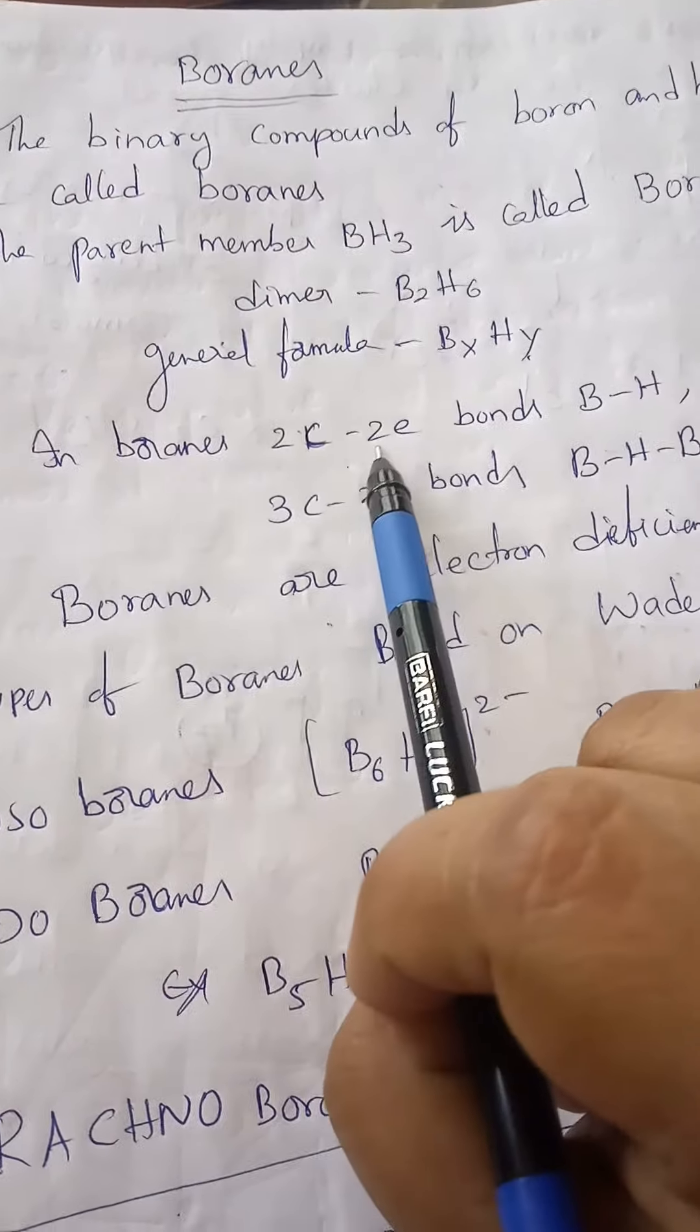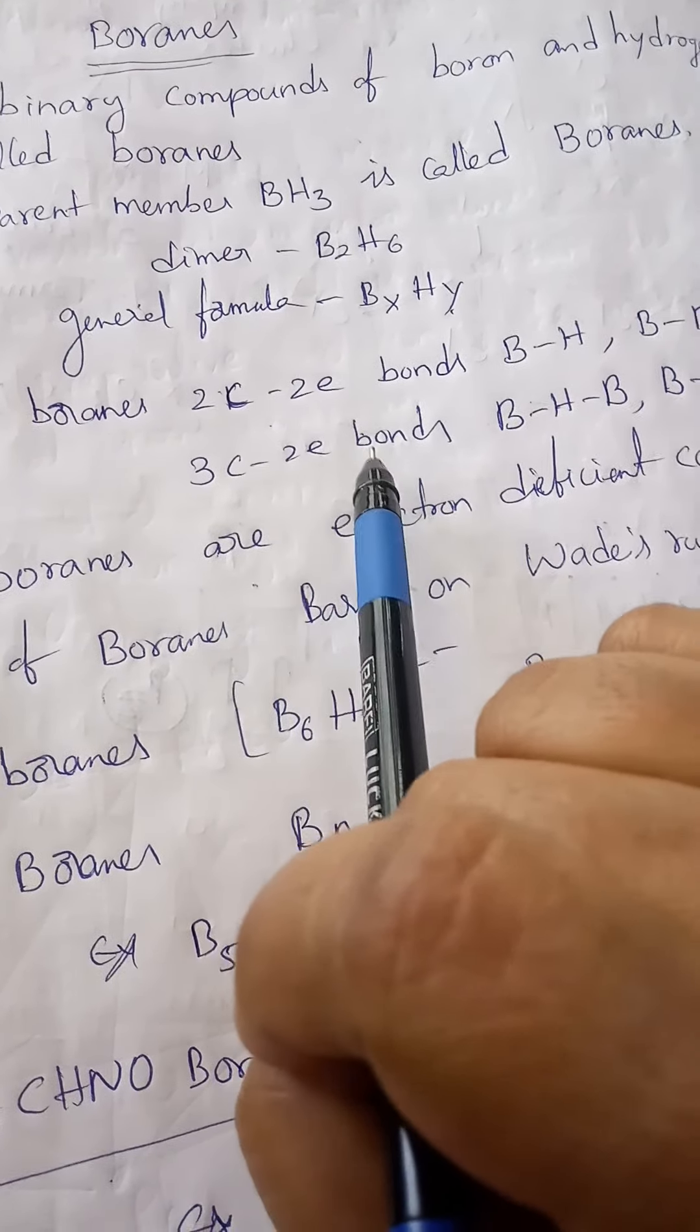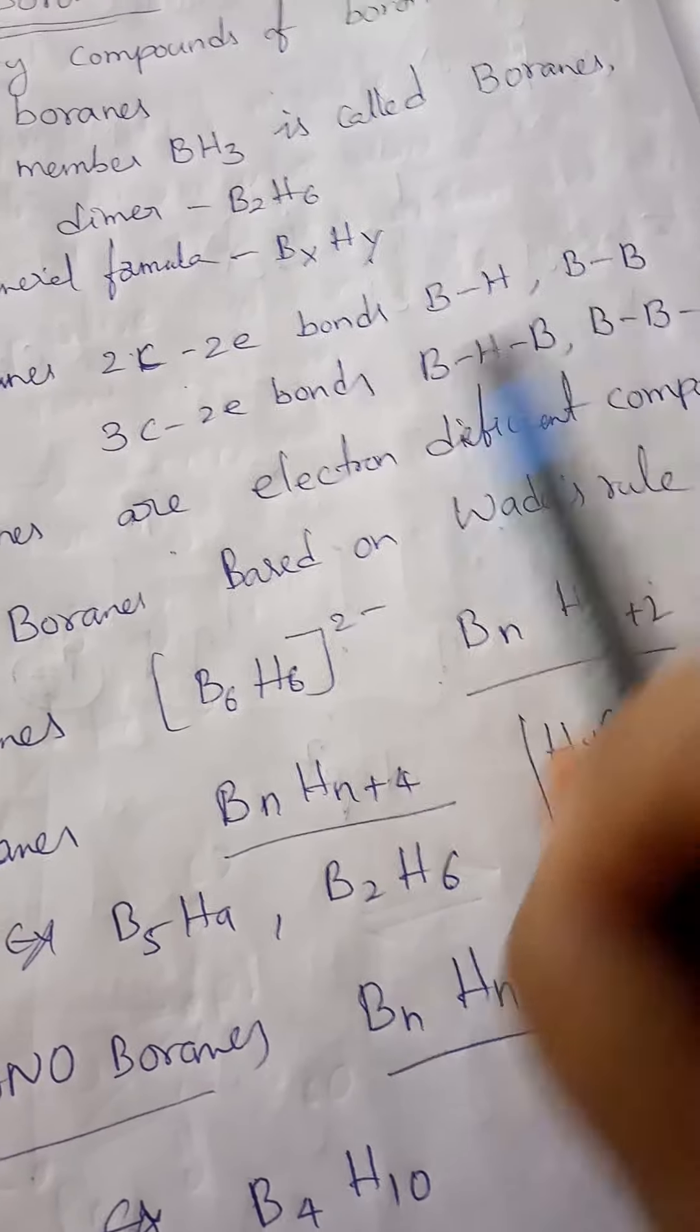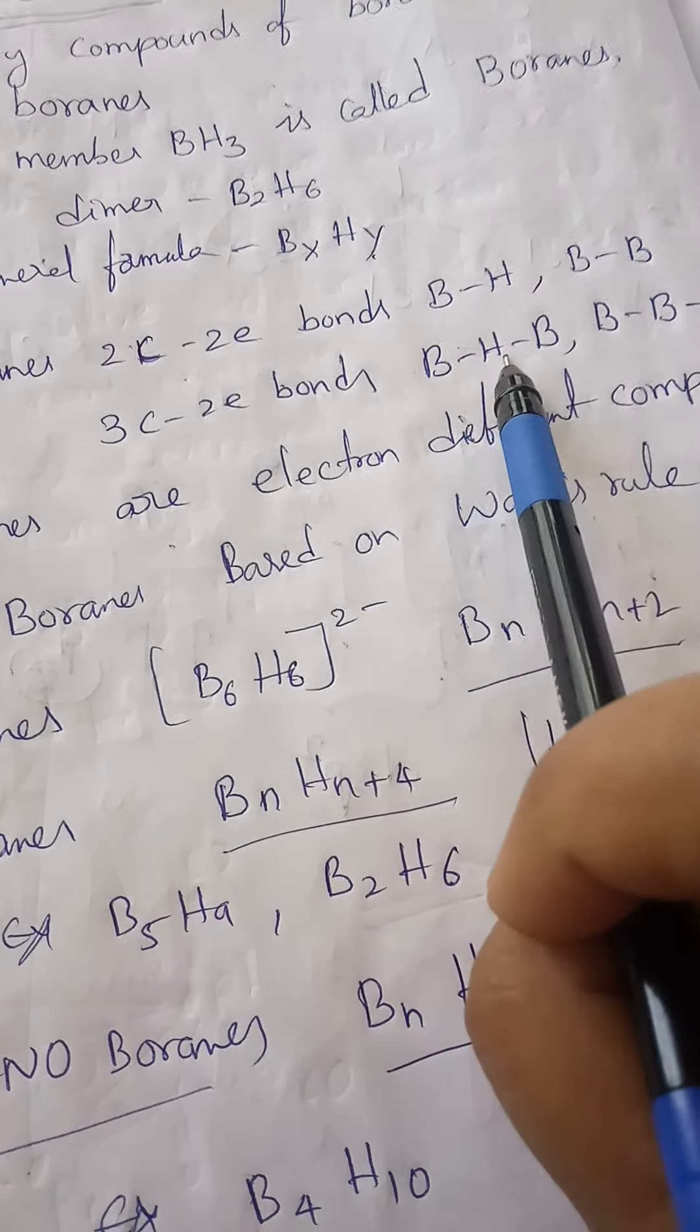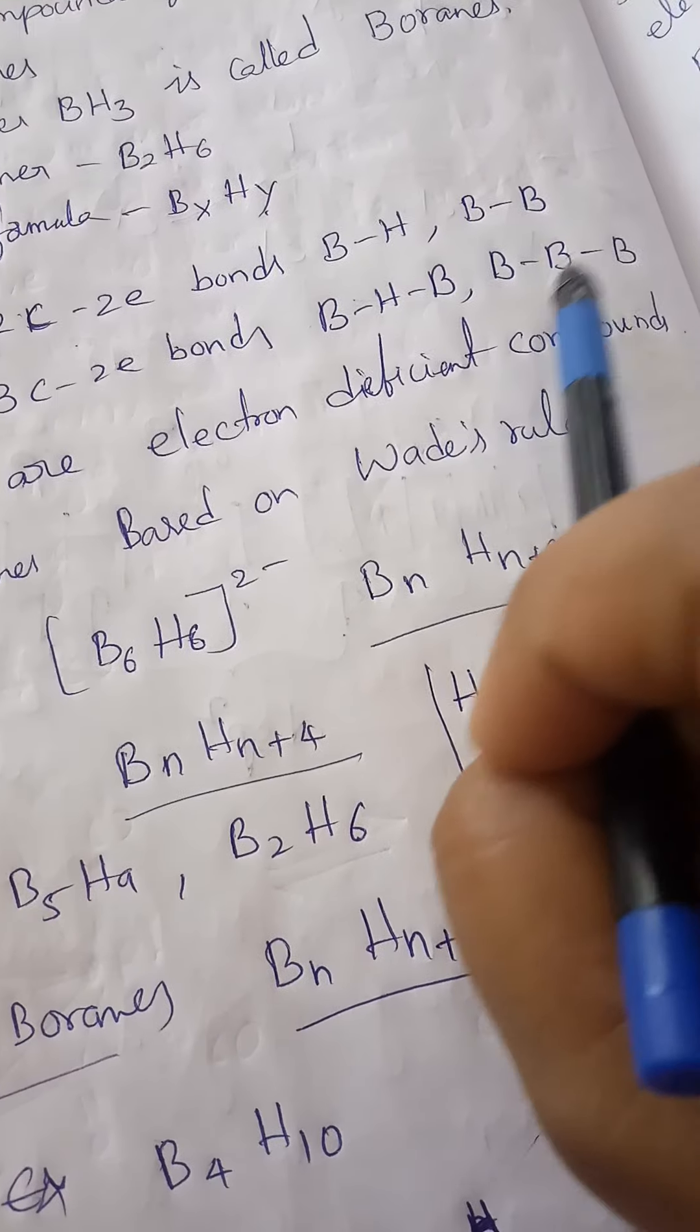In boranes, two types of bonds are there: two-center two-electron bonds, which are BH bonds and BB bonds, and three-center two-electron bonds.